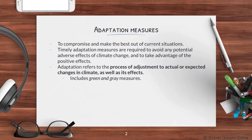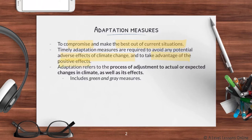Adaptation measures basically mean to compromise and make the best out of the current situation. This is a scenario whereby the effects of climate change have already taken place, and now we have to adapt to these effects and manage the impacts using adaptation strategies. Timely adaptation measures are required to avoid potential adverse effects of climate change and to take advantage of any positive effects.